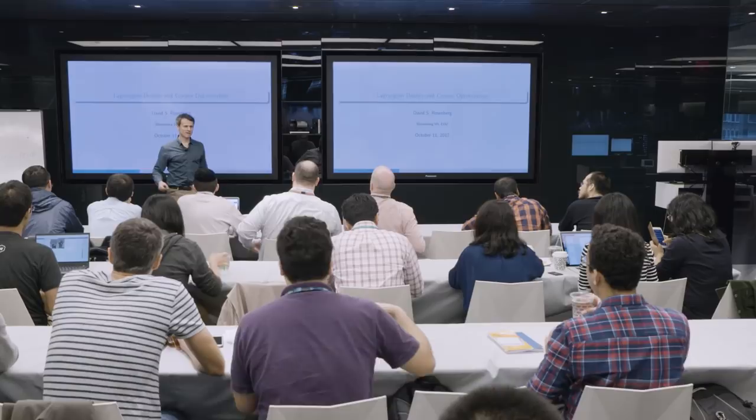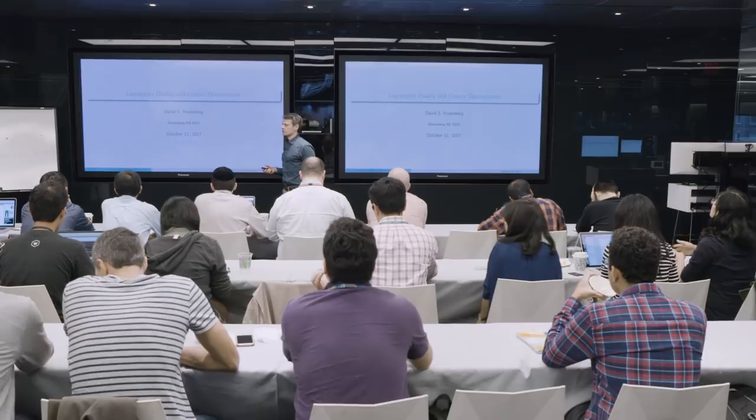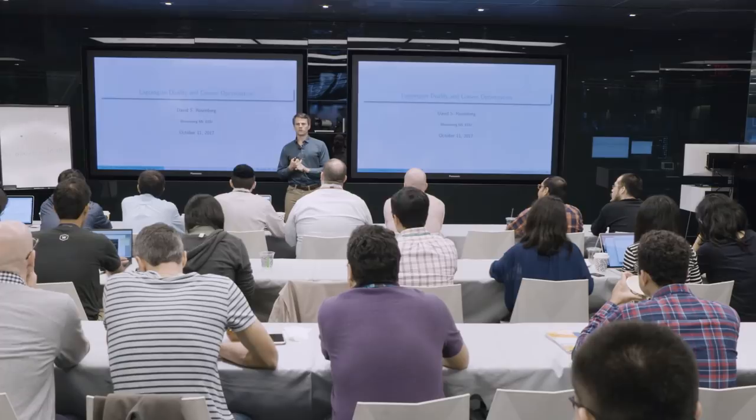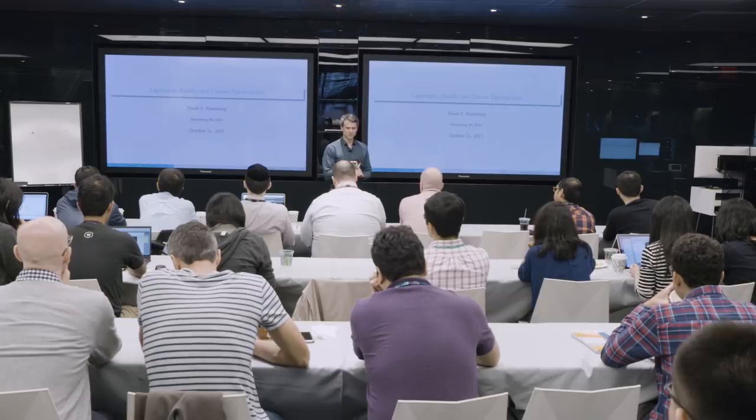We're about to take a bit of a mathematical detour into a very light introduction to Lagrangian duality and convex optimization in general, and optimization in general — some of the terminology and some of the techniques. This offers us two things in this class. One, it'll allow us to make a proof, a mathematical statement, of that equivalence I mentioned last week between the penalization and the constraint form of optimization — the Tikhanov and the Ivanov form.